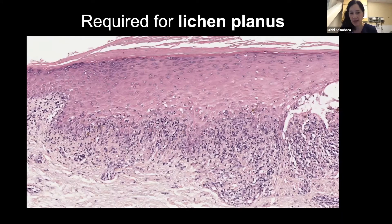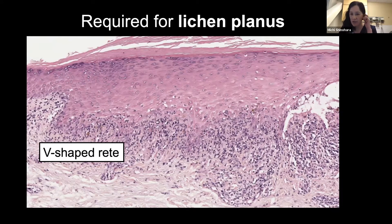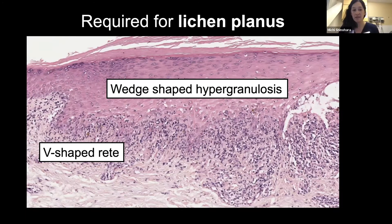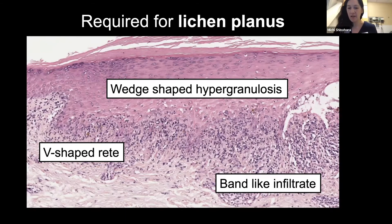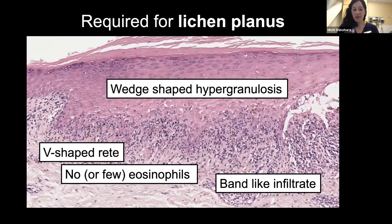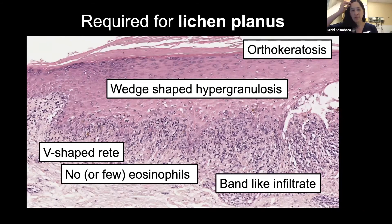What's required for lichen planus is V-shaped, wedge-shaped, or sawtooth rete ridges — all the same thing, referring to this shark tooth shape. Wedge-shaped hypergranulosis. A band-like lymphocytic infiltrate that obscures the dermal-epidermal junction. And importantly, no or very few eosinophils — with an exception being hypertrophic lichen planus. You should also see orthokeratin; any perikeratin is a no-go for lichen planus.